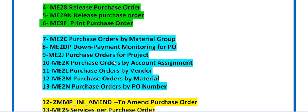ME2J is used for purchase orders related to a project. Sometimes we create capital estimates, create a project, and create WBS elements. For external processing of project services, a purchase requisition is generated and then used for creation of a project-related purchase order. To find purchase orders created for any project, you use transaction code ME2J.